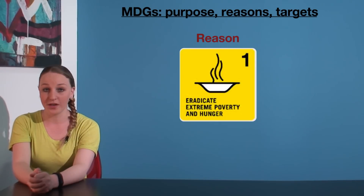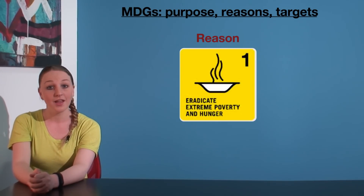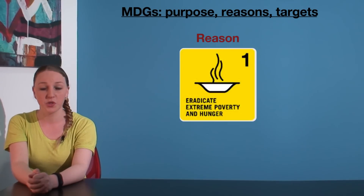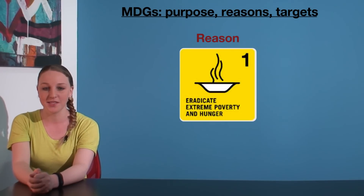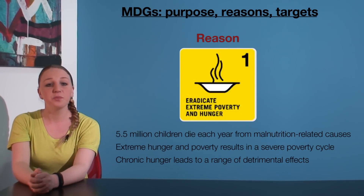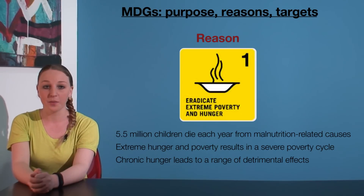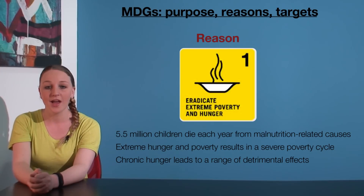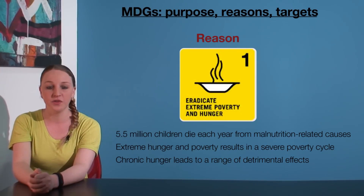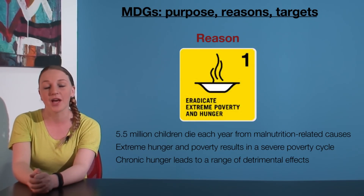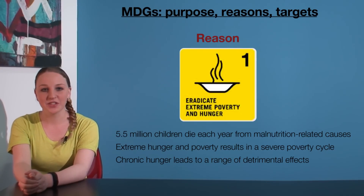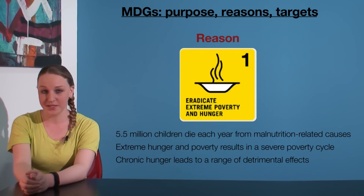Let's focus on MDG 1, Eradicate Extreme Poverty and Hunger. We can use some background information to explain why each goal has been included in the MDGs. For example, 5.5 million children die each year from malnutrition-related causes. Extreme hunger and poverty results in a severe poverty cycle — a child born in a developing country has a 40% chance of living in extreme poverty. Chronic hunger leads to a whole range of detrimental effects, including a lack of education, malnutrition, stunted growth and poor mental and social health outcomes. These statistics alone seem like reason enough for inclusion of MDG 1.